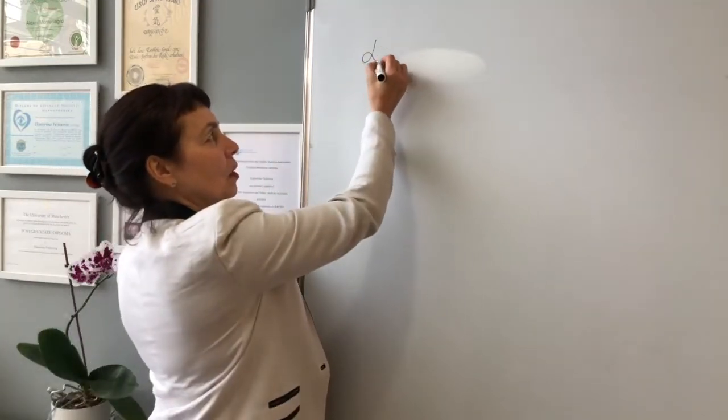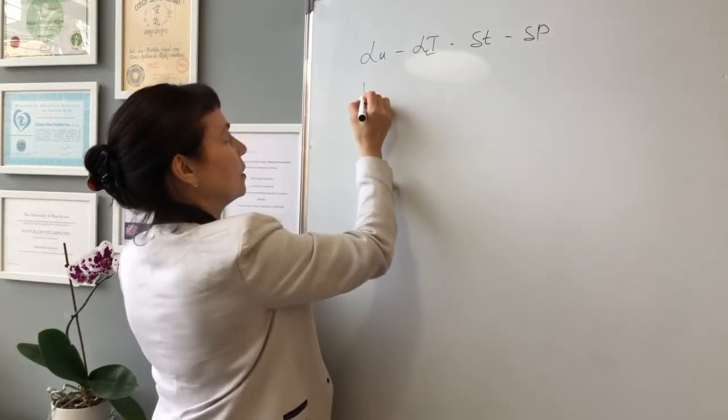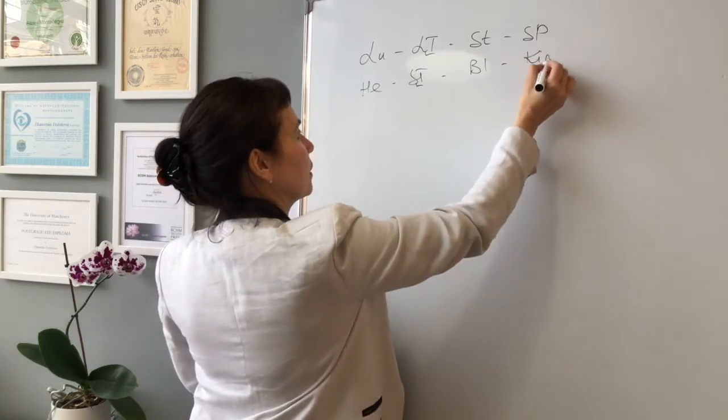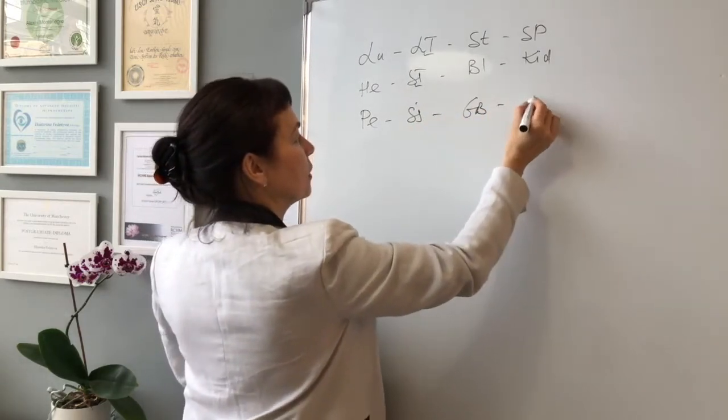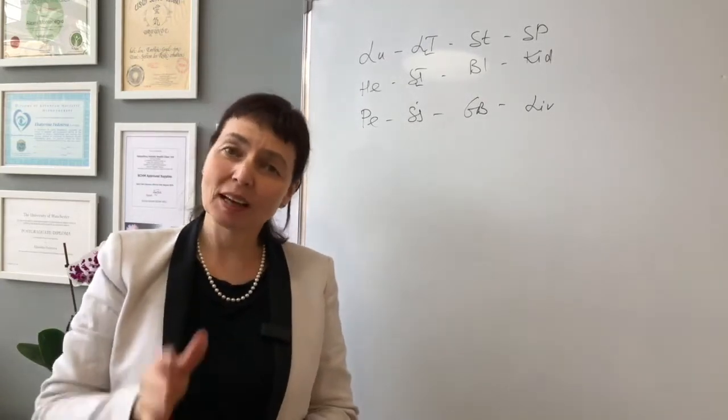This is what we're going to do. The song will include as a text all acupuncture channels, all 12 acupuncture channels that we learned so far: lung, large intestine, stomach, spleen, heart, small intestine, bladder, kidney, pericardium, triple heater, gallbladder, liver. I know that you know all these channels, but as I said, we'll have a bit of fun.